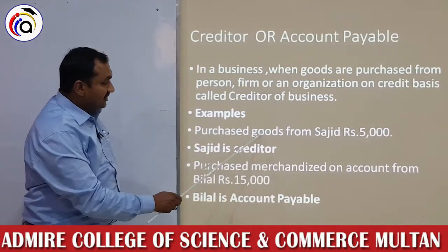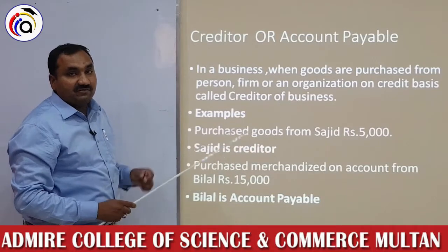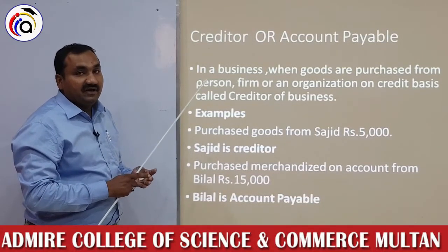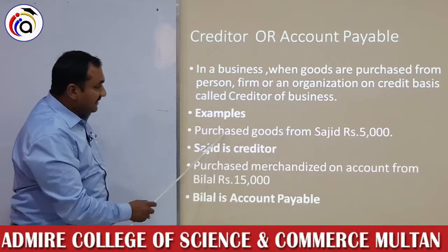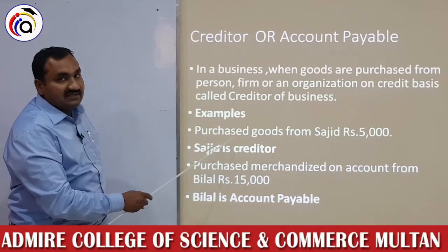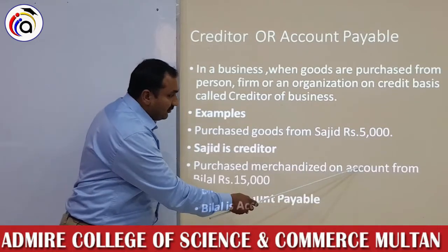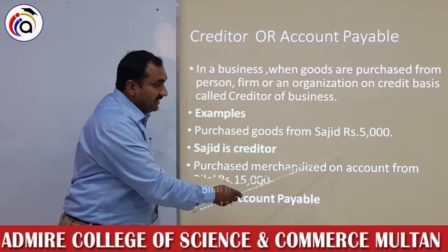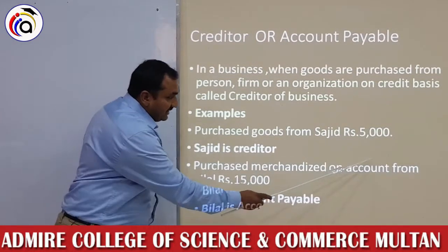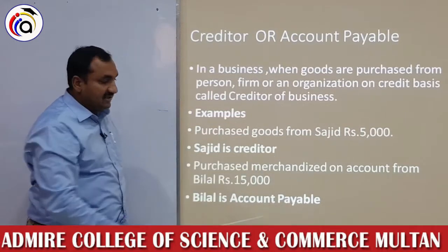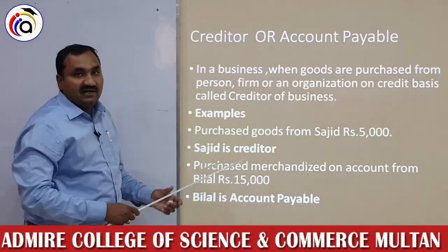Example: purchase goods from Sajid, rupees five thousand۔ اشیاء خریدی ہیں Sajid سے — party کا name آیا ہے تو transaction ادھار ہے۔ اس مثال میں Sajid ہمارا creditor ہے، مطلب Sajid کو پیسہ ادا کرنا ہے۔ Next transaction: purchase merchandise on account from Bilal, rupees 15,000۔ یہ word 'on account' بھی ادھار کو ظاہر کرتا ہے — Bilal ہمارا account payable ہے، مطلب Bilal کو پندرہ ہزار روپے ادا کرنا ہے۔